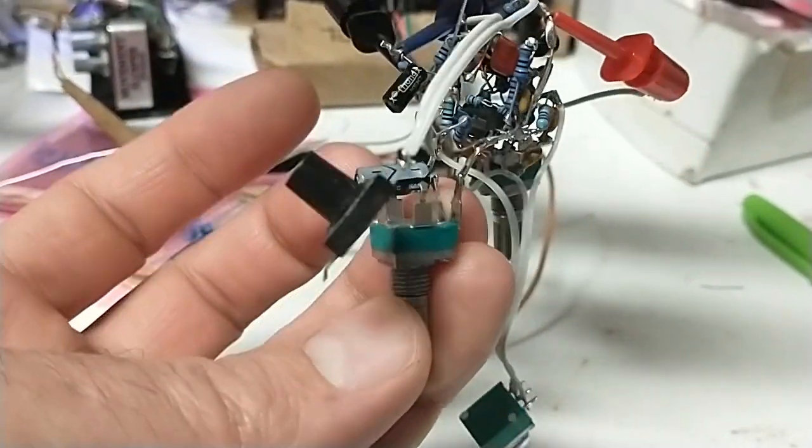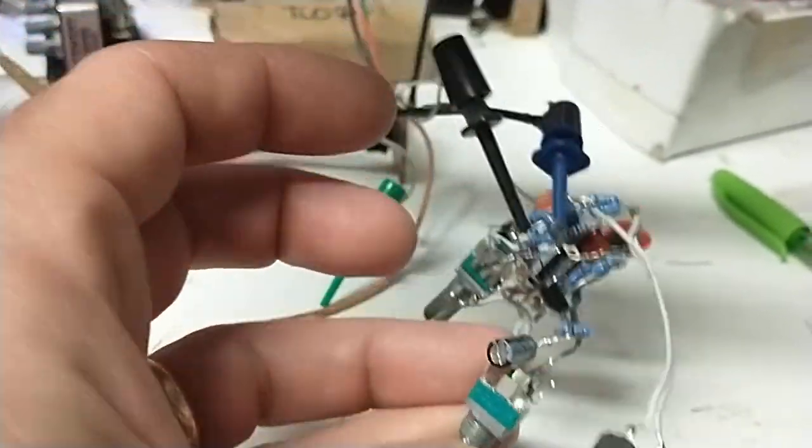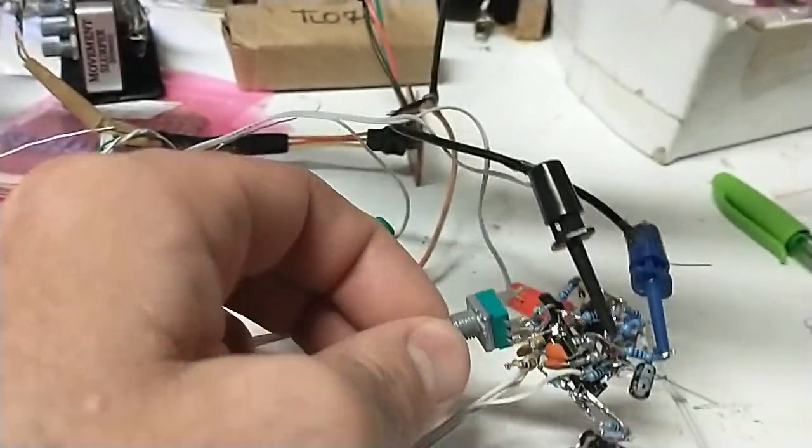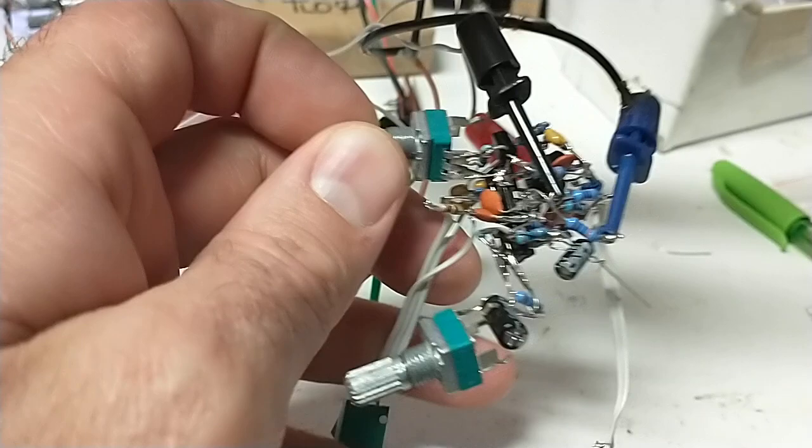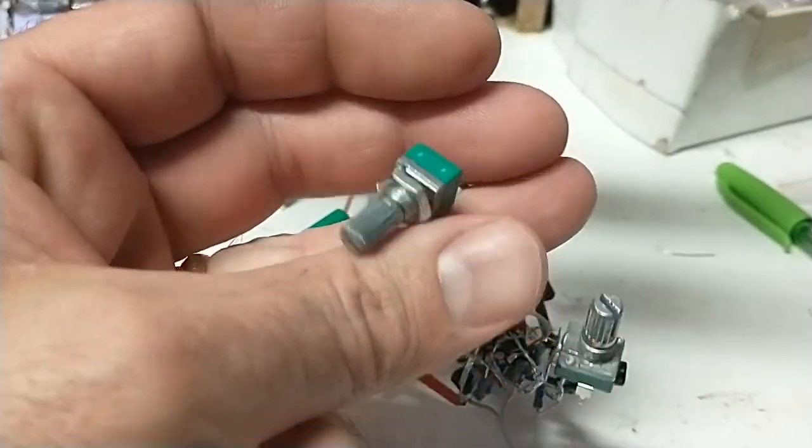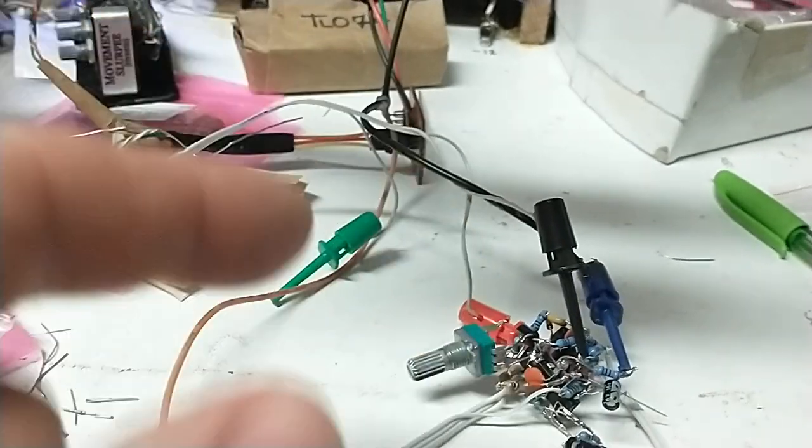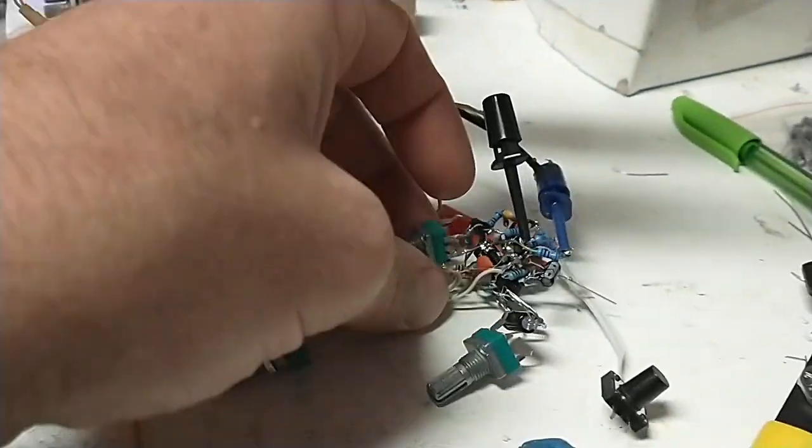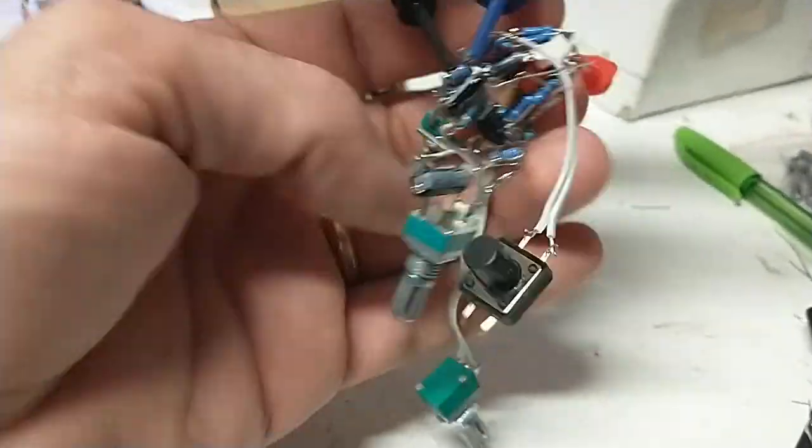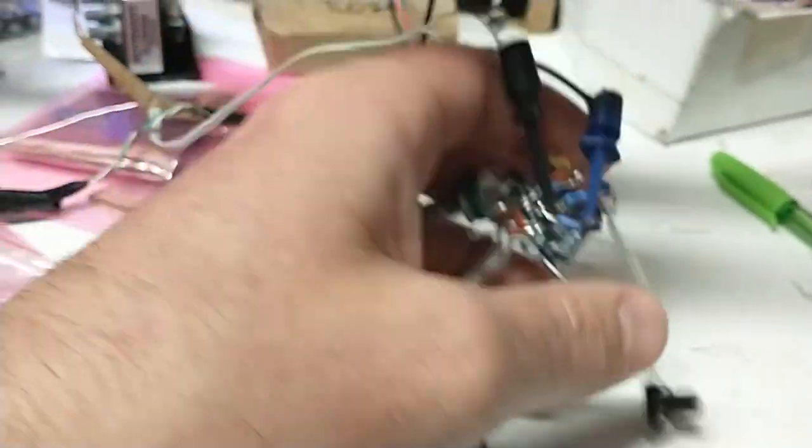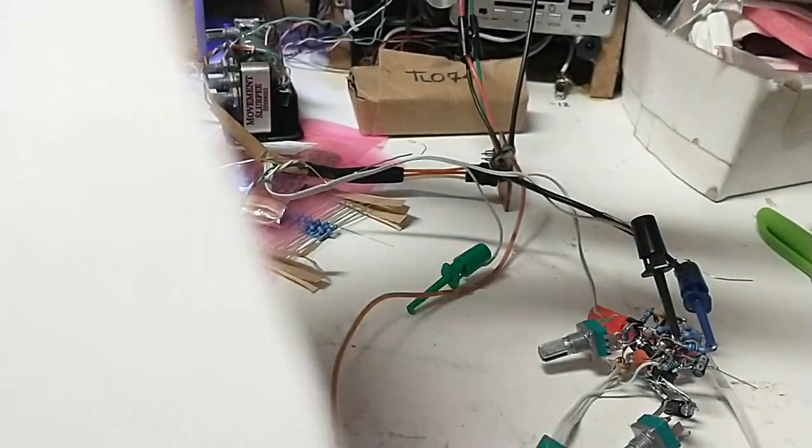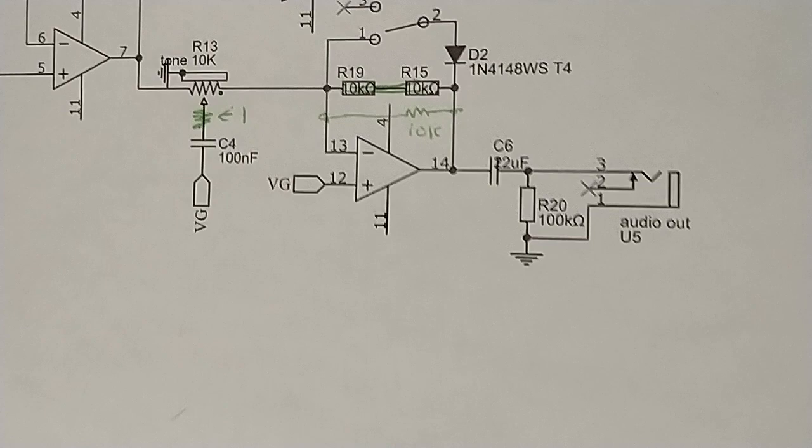This potentiometer does the decay amount. This potentiometer does the pitch. And this potentiometer does the tone. Now the tone, I have it modified or tweaked. Oh, there's also a switch. I forgot to mention when we were looking at the schematic. But there is a clipper.